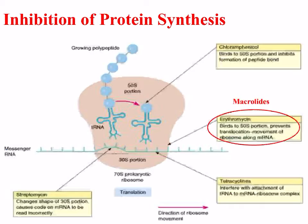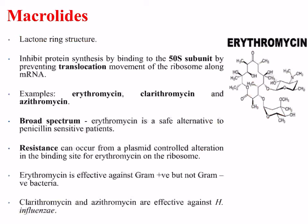Our second family that targets protein translation are the macrolides, which includes erythromycin. These also bind to the 50S subunit. Macrolides are recognizable by having a lactone ring structure, as shown in the diagram on the right. They inhibit protein synthesis by binding to the 50S subunit and preventing translocation — the movement of the ribosome along the mRNA.